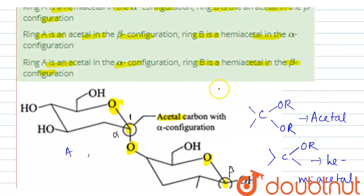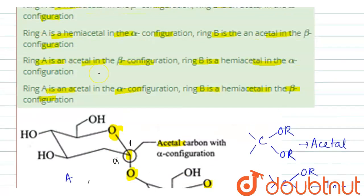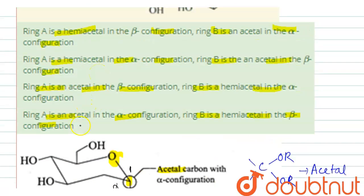Now it is clear. The fourth option is correct: ring A is an acetal in the alpha configuration, and ring B is a hemiacetal in the beta configuration. Therefore, option 4 is the correct answer. Thank you.